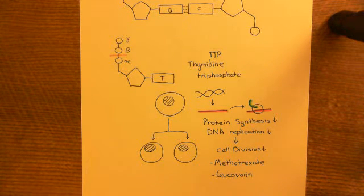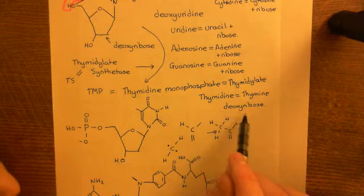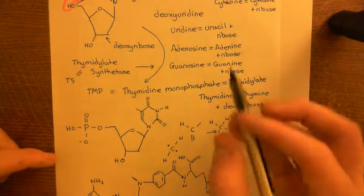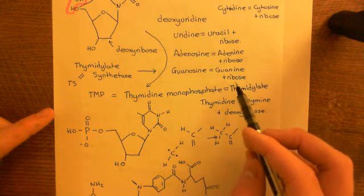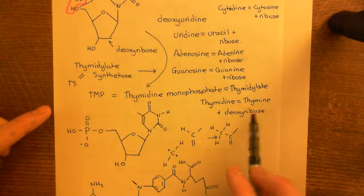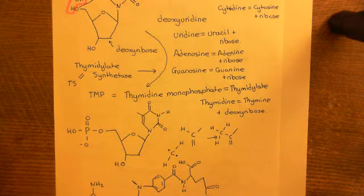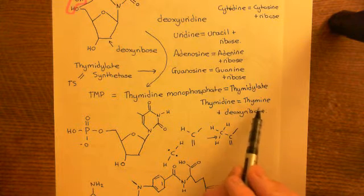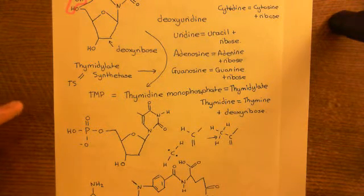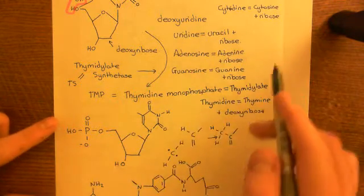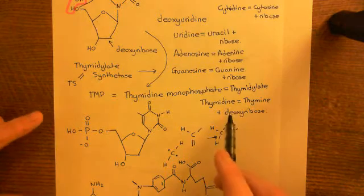This removal of thymidine monophosphate should not affect the production of mRNA. This is the reason that thymidine doesn't mean thymine plus ribose. Instead, it means thymine plus deoxyribose, whereas all the others — for instance, cytidine, uridine, adenosine, and guanosine — mean the organic base plus ribose, whereas thymidine means the organic base plus deoxyribose. That's because thymine is not used in RNA, so why would you want thymine plus ribose? You wouldn't, because thymine simply isn't put into RNA. Instead, you put uridine — uracil plus ribose — in its place. So these four are the RNA nucleosides, and thymidine is only in DNA.